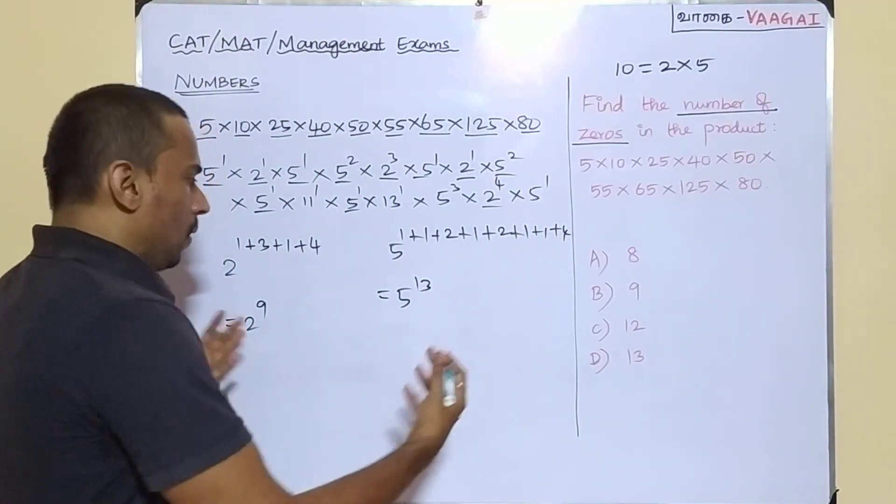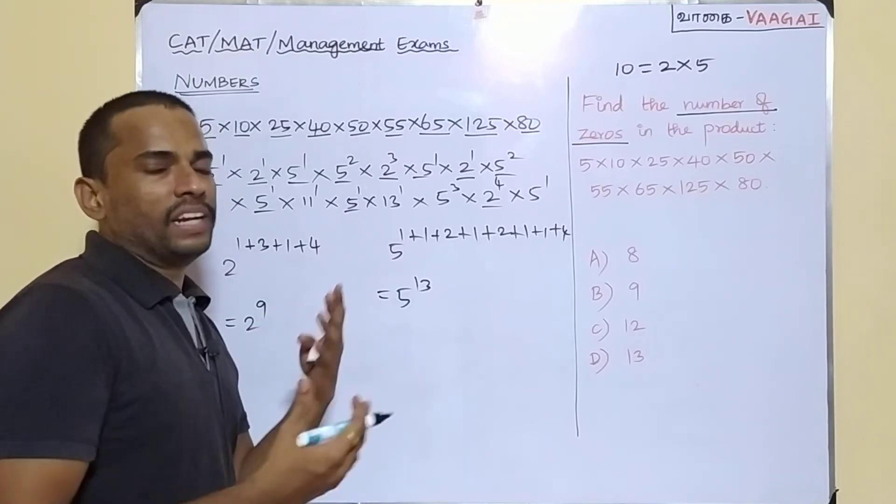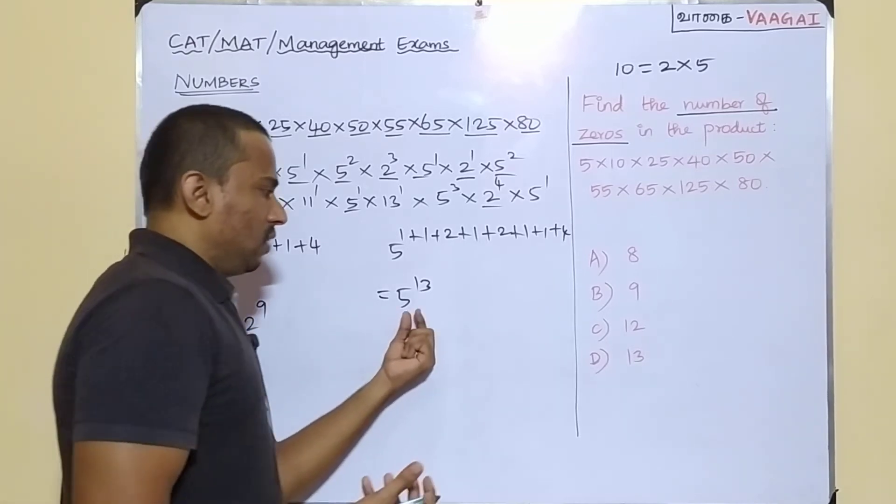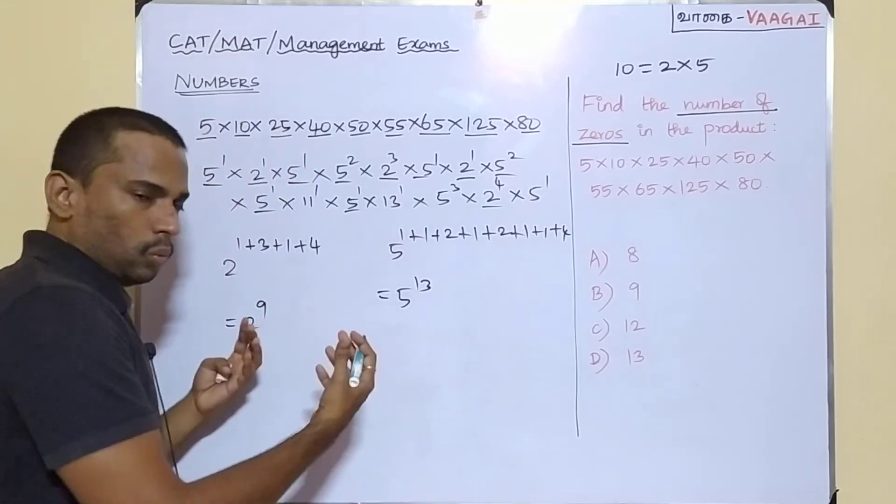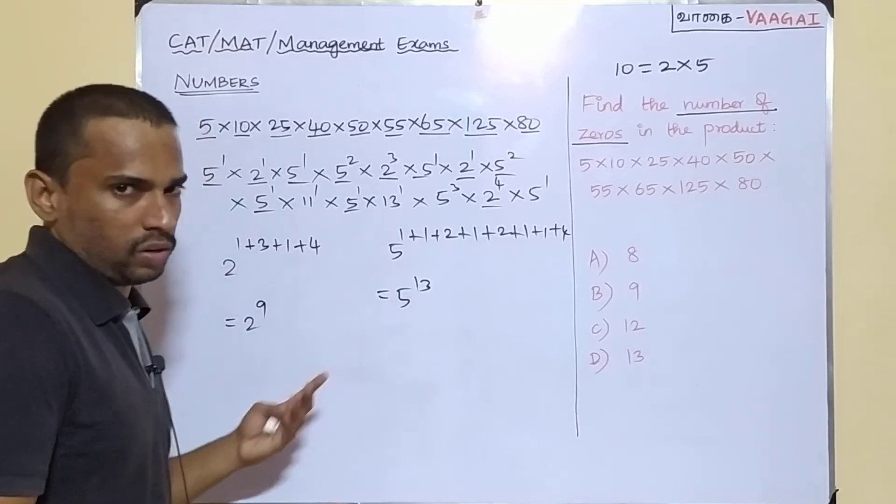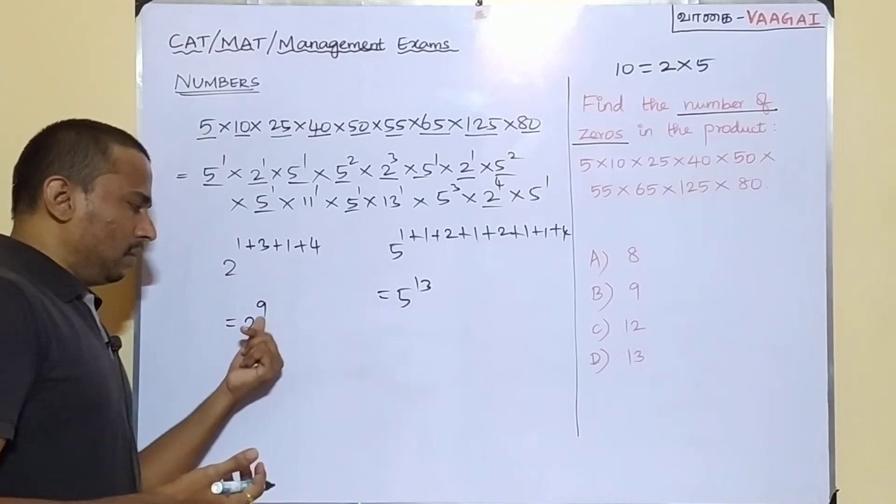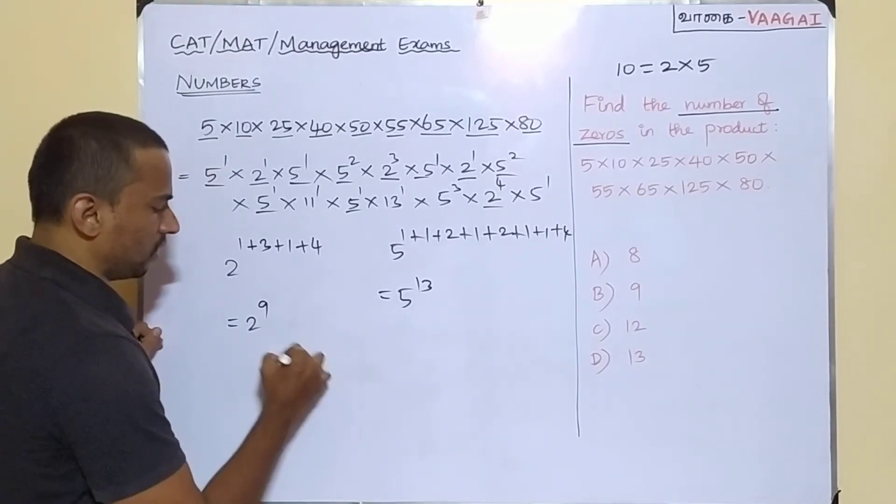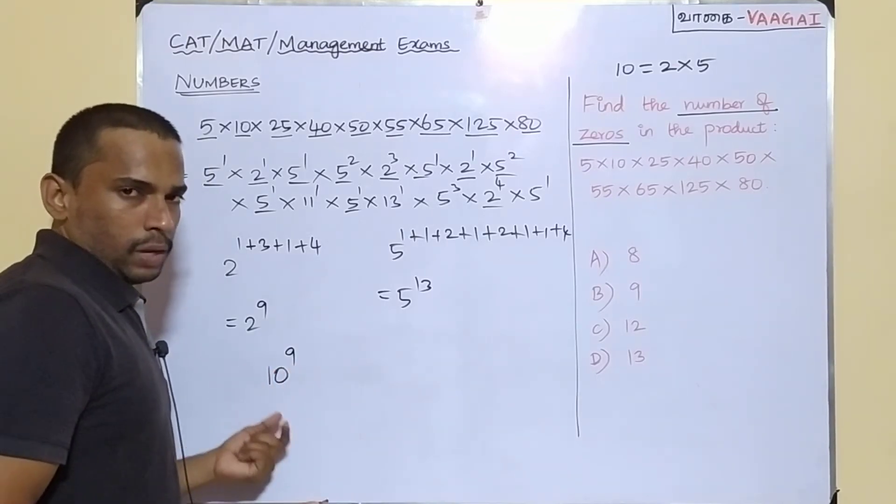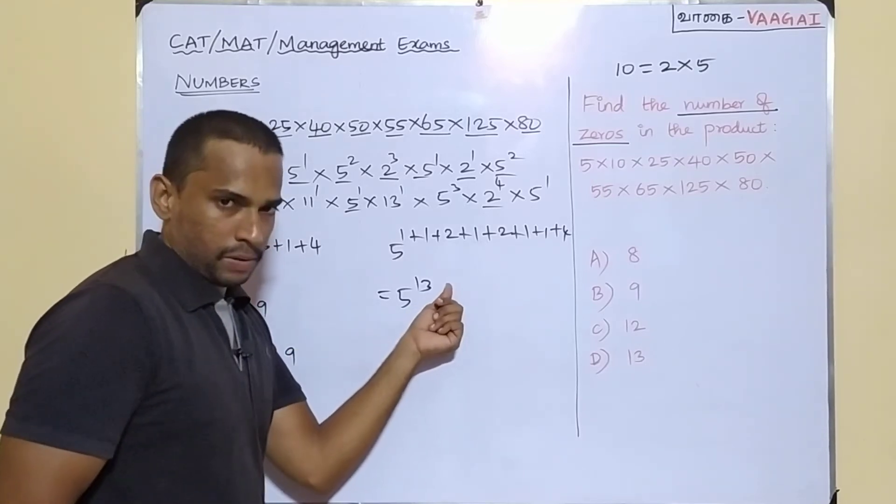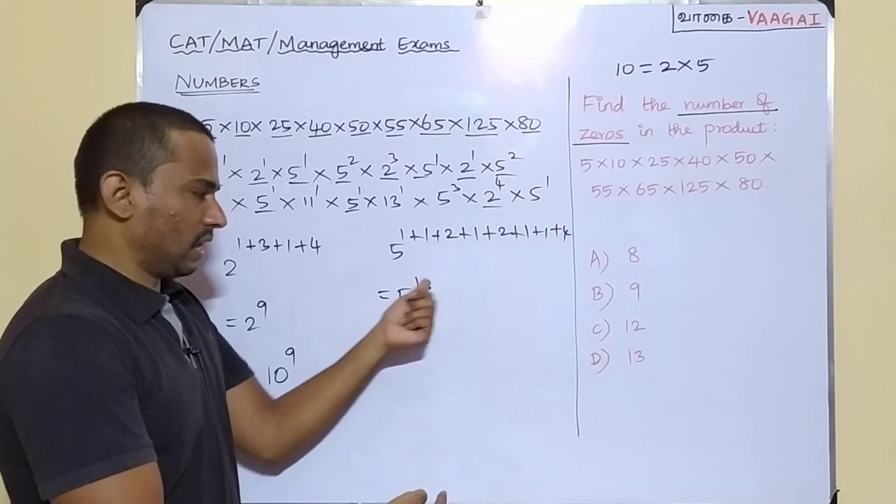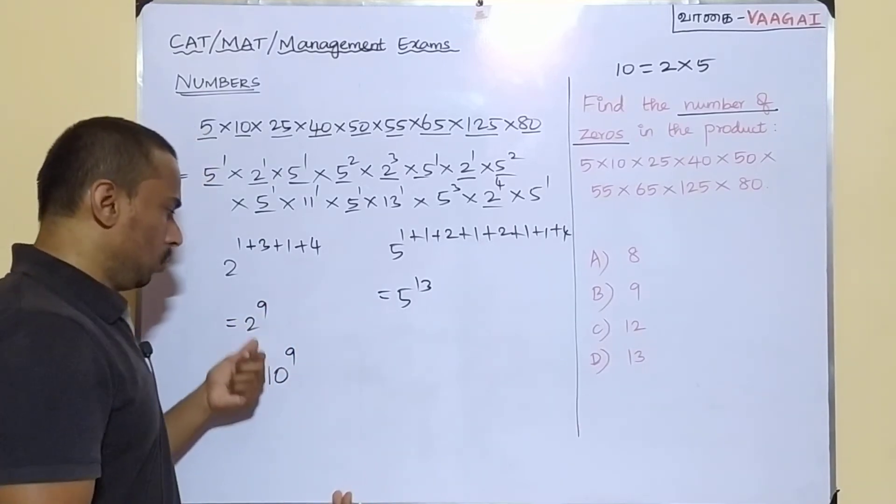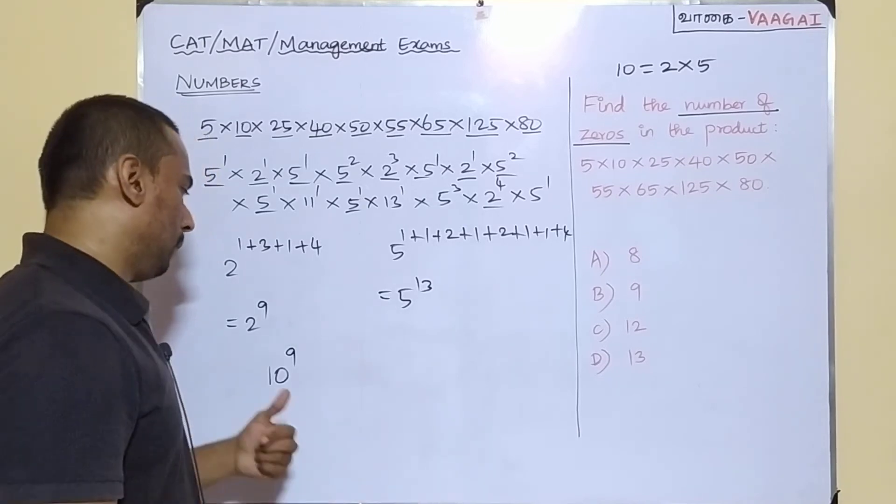Now just think, when we try to collide these terms, maximum how many 10s can we form? There are 9 2s available, that is, 2 power 9, and 5 power 13, that means 13 5s available. So it's very clear, the least power is available with 2 only, which is going to be 9. So that means at a maximum, we can collect only 9 tens, that means 10 power 9. Why? Because 2 power 9 will combine with 5 power 9, and the other 5 power 4 will not have sufficient 2s to collide to form 10.